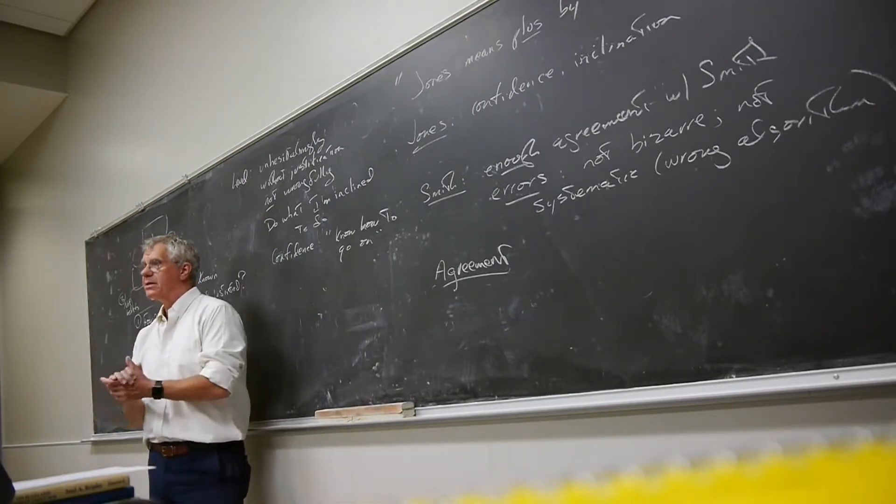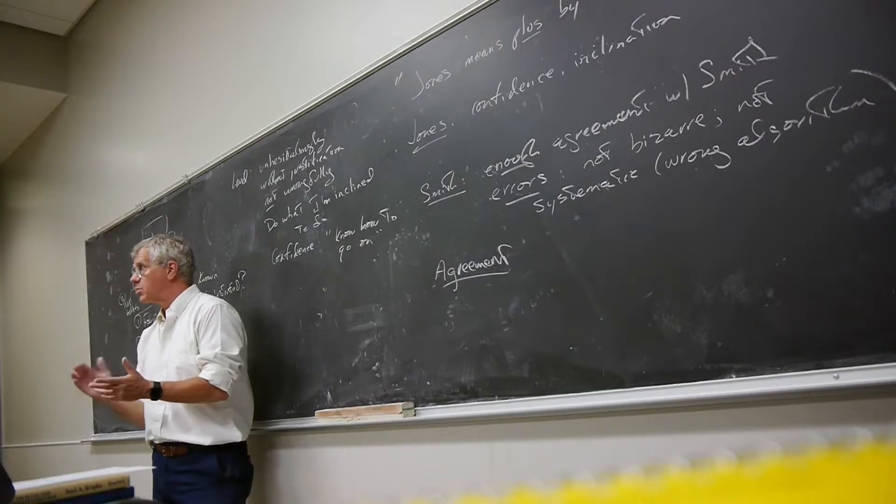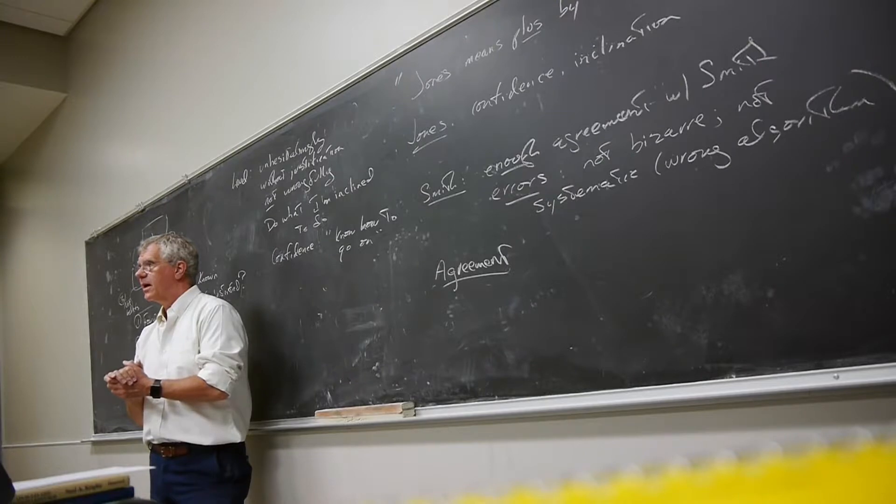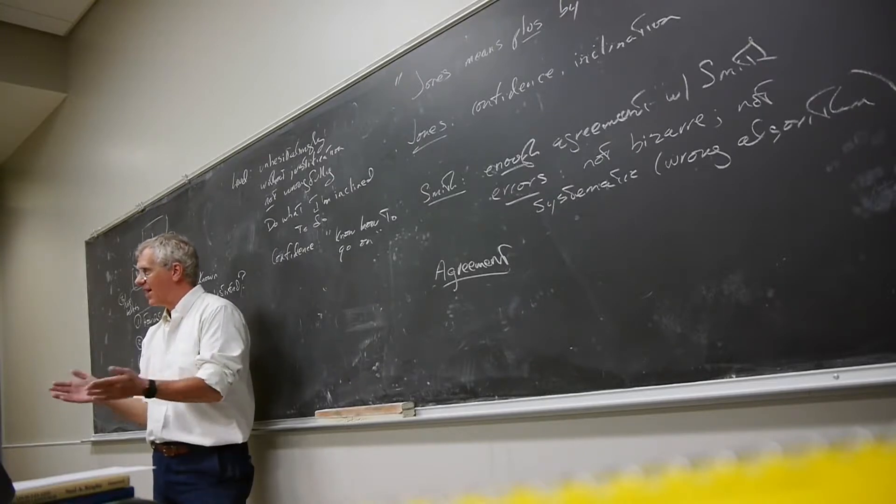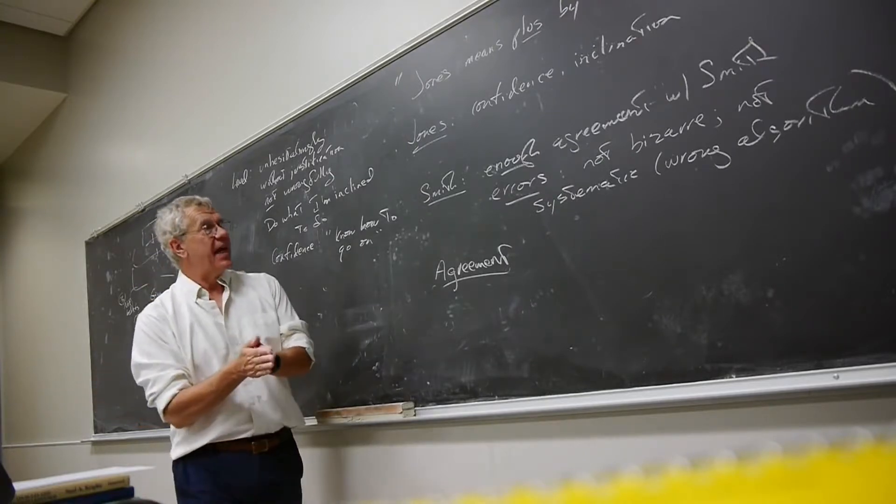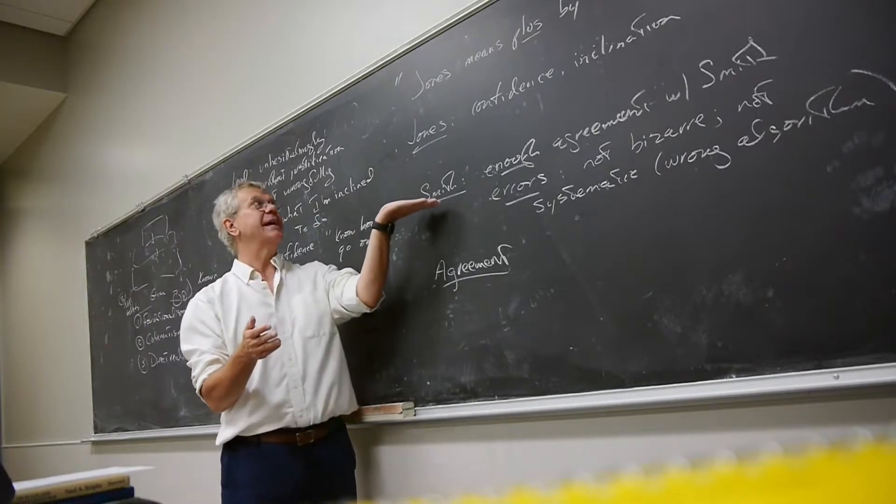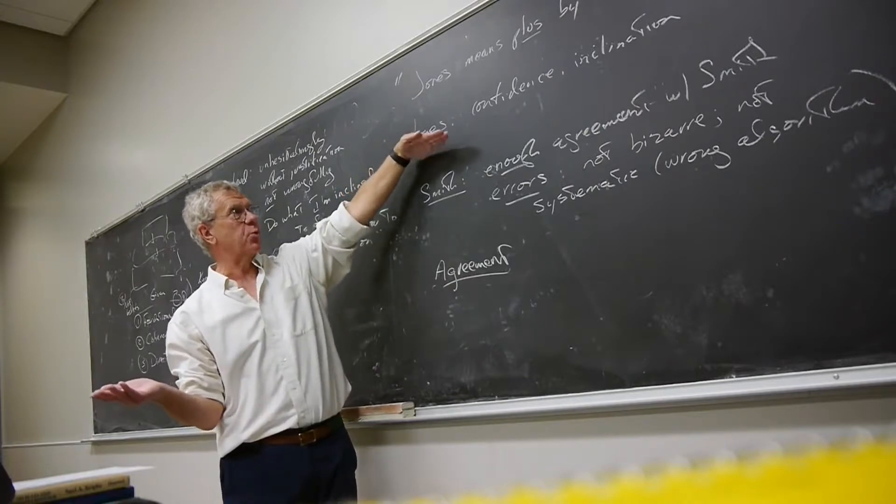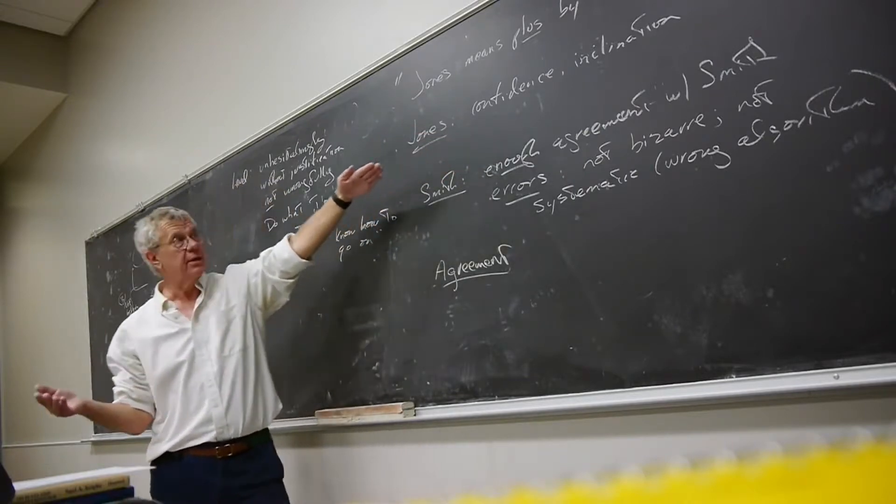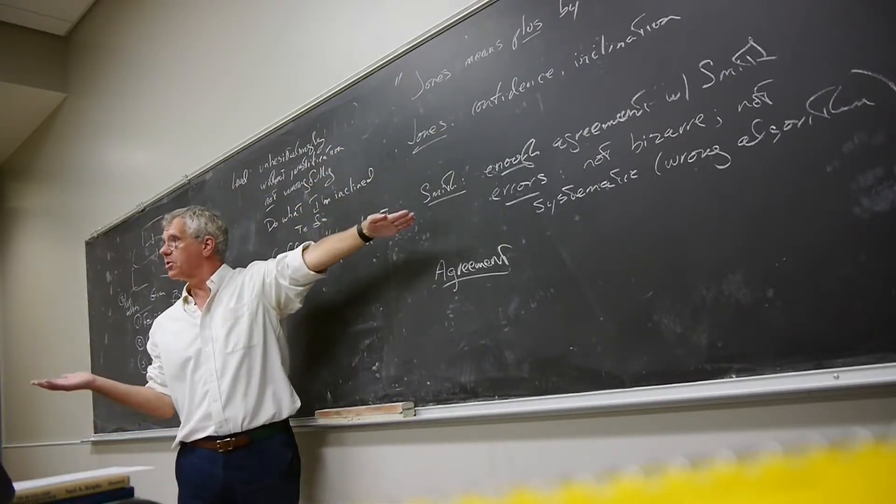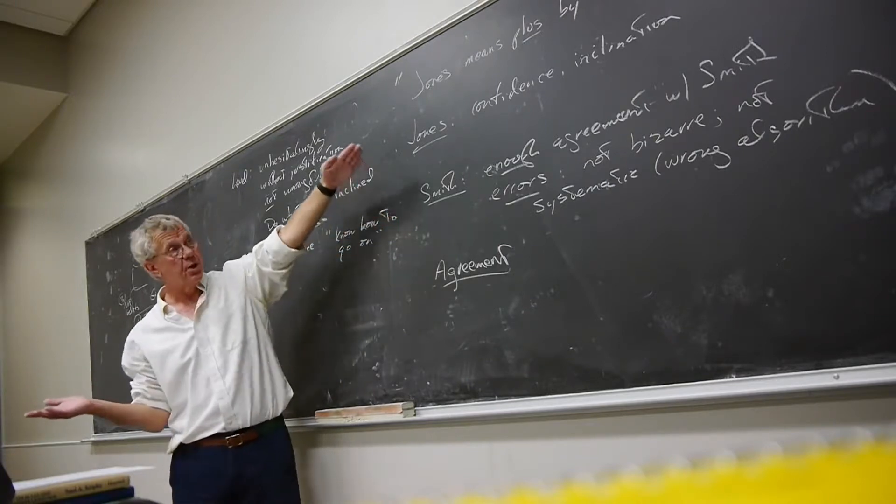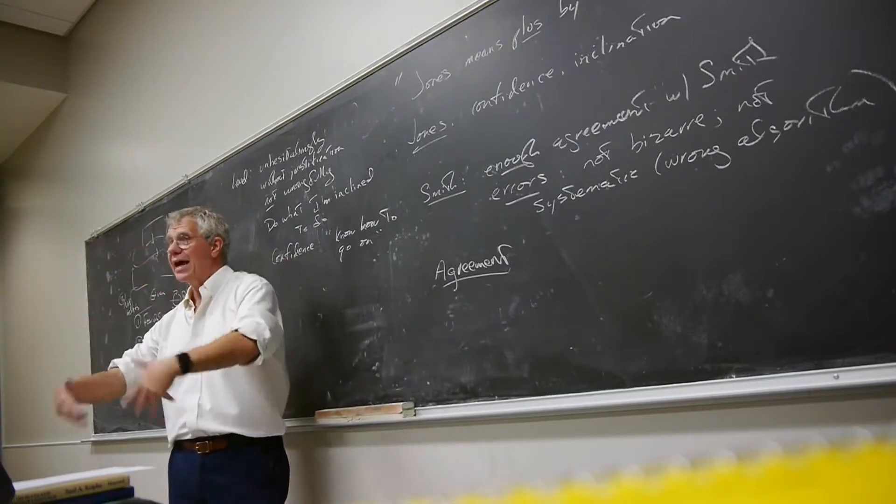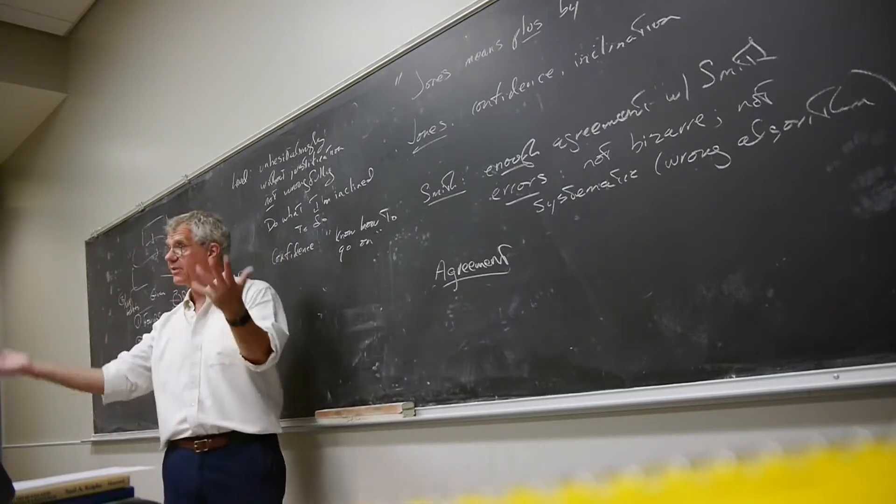And as long as there's enough agreement in the social practice, things work out. Now, some things have to be the case for such a social practice to exist. And so, one of those things is agreement. People have to, pretty much, in the community, agree about what sums are. Suppose there's a lot of disagreement. Suppose you say, what's one plus one? And some people say two, but others, the dissidents say three. Then you've got a problem, right?